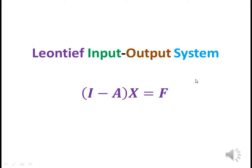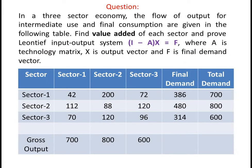In this video, we explain the Leontief input-output system with the help of a suitable example. In a three-sector economy, the flow of output for intermediate use and final consumption are given in the following table. Find the value-added of each sector and prove the Leontief input-output system (I minus A) times x equals f, where A is the technology matrix, x is the output vector, and f is the final demand vector.